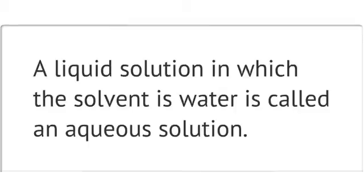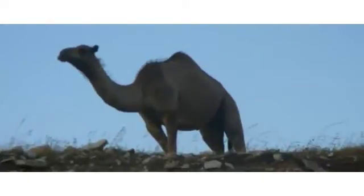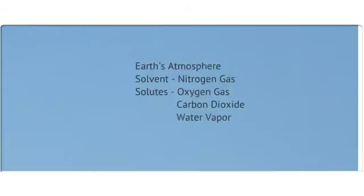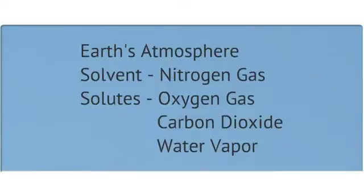A mixture of gases can also be considered a solution. Our atmosphere is a great example of this. This is a picture that I took in Israel a few summers ago — I don't want you to focus on the camel, but instead the sky. The most abundant gas in our atmosphere is nitrogen gas. Present in lesser amounts are carbon dioxide and oxygen gas. Water vapor, water in gas form, can also be a component of the atmosphere in the form of humidity. Nitrogen gas is considered the solvent because it is the most abundant of the components. The other components are solutes.